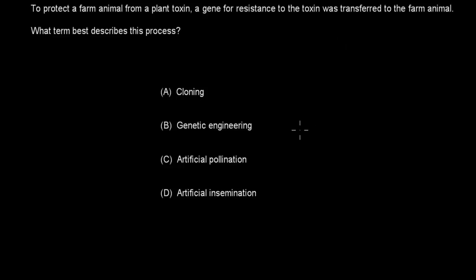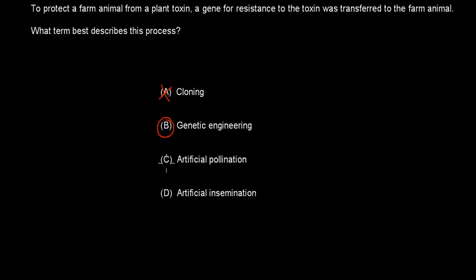Welcome back. The correct answer is genetic engineering. We don't call it cloning — that involves making identical copies. We don't call it artificial pollination or insemination, because those refer to the transfer of gametes from one species to another. When it comes to transferring just a gene, that's called genetic engineering. So B is correct.